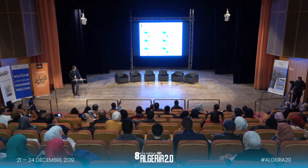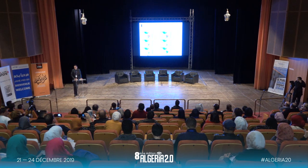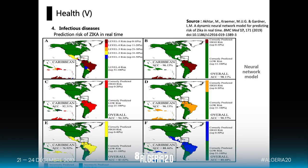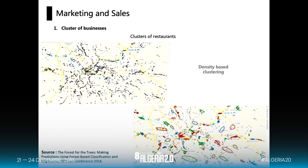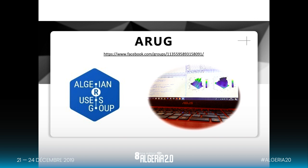We can use deep learning and neural network models to develop real-time maps of infectious diseases, which is relevant for Algeria. Finally, spatial data science can be used in marketing and sales for clustering to identify concentrations of restaurants, cafes, or hotels. This presentation is from the Algerian R Users Group, which uses R for spatial statistics and data science. You are welcome to join the group. Thank you.